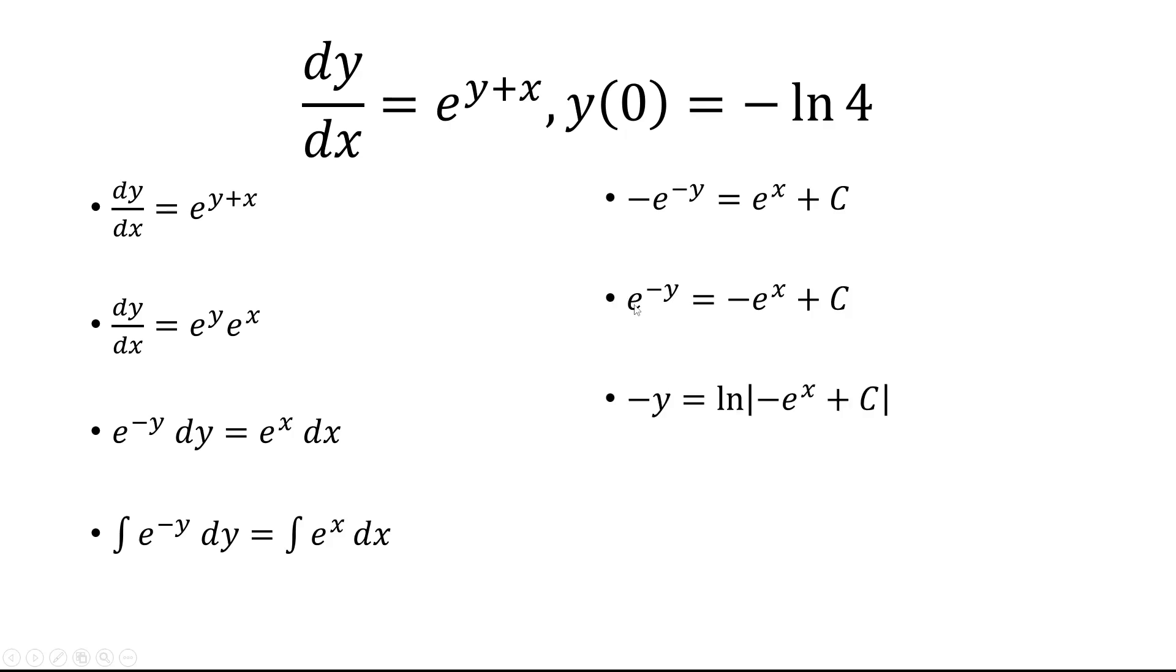And then we're going to take the natural log of both sides. So the natural log of e^(-y) is negative y times ln of e, which ln of e is 1, so it's negative y.